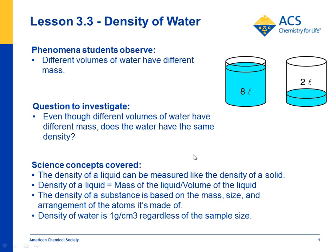The other big idea here is that you can measure the density of a liquid just like you measure the density of a solid — all you need to know is the volume and the mass. The density of a liquid, in this case water, is related to the size, arrangement, and mass of the molecules that make it up, and the density of water is 1 gram per cubic centimeter.